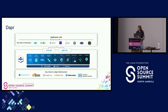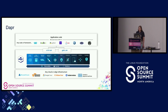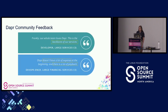Dapper stands for Distributed Application Runtime. It's a portable event-driven runtime for building distributed apps across the cloud and edge. It's a set of APIs for building secure and reliable microservices in a cloud-native environment. Dapper is actually the 10th largest CNCF project with a ton of companies using it. Our users and community say that Dapper is the backbone of their services — it does not have a lot of expense, and there's a ton of payback.